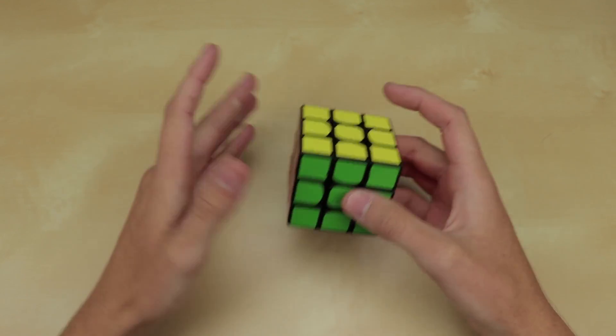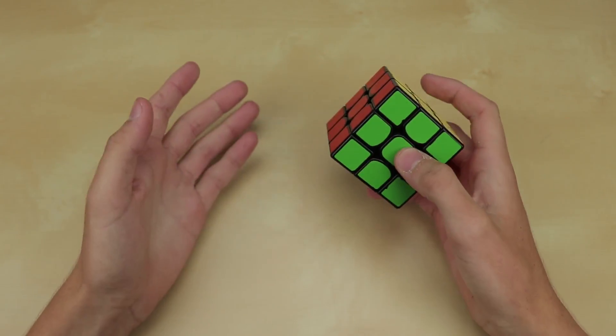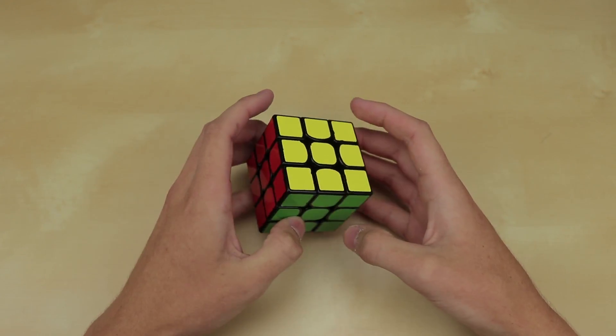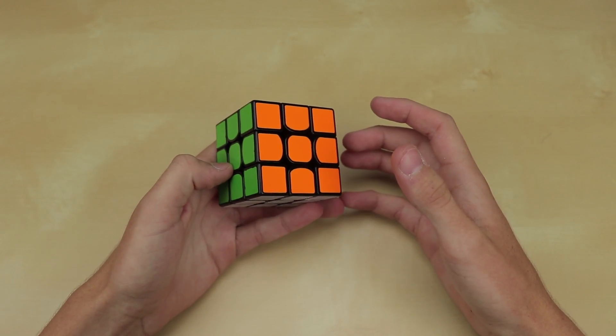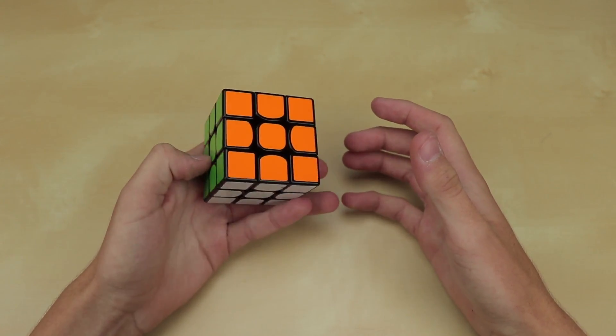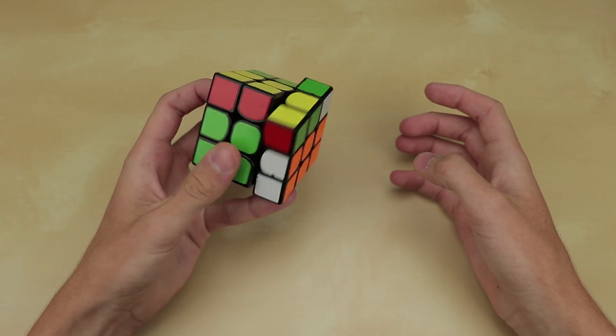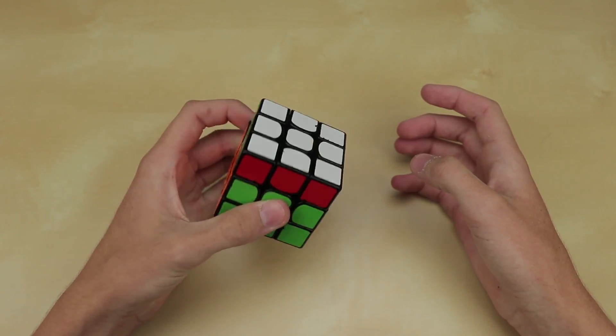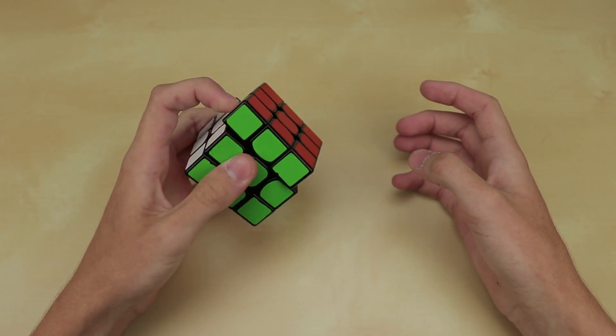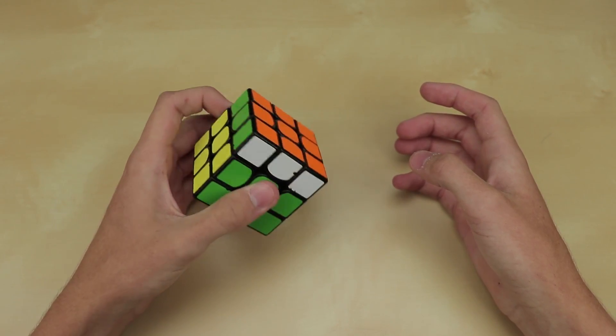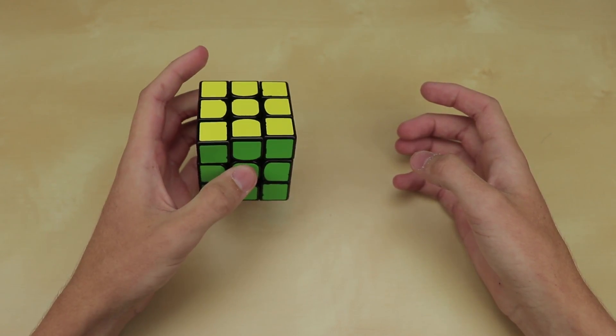Of course I do use full PLL all the time in all of my CFOP and ZZ solves, but you may be wondering why I learned full OLL if I said that I was going to be using ZZ. Well, to be honest, I'm not really using ZZ a whole ton. In my one-handed solves, I definitely use it all the time, pretty much every single one-handed solve I do ever. I'll use ZZ because I am significantly faster using ZZ than using CFOP one-handed.